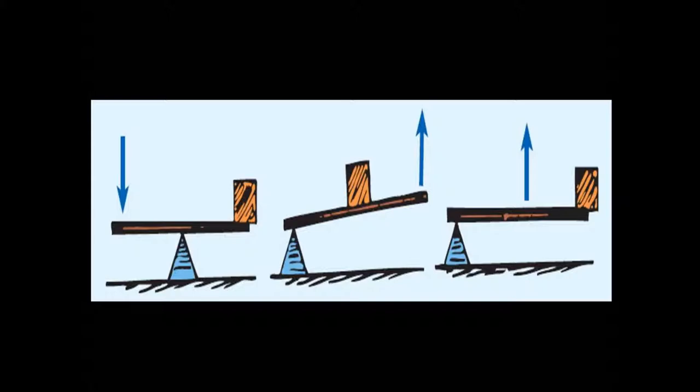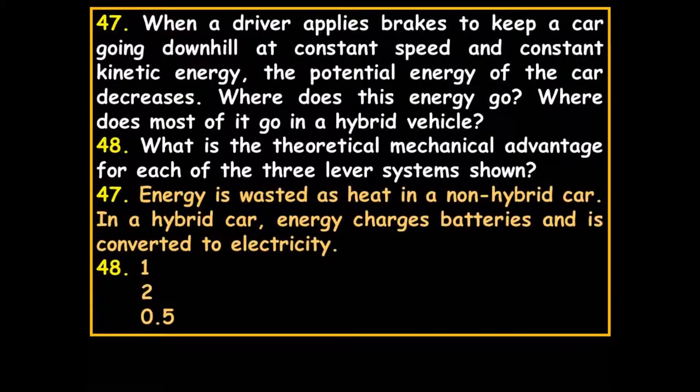When a driver applies brakes going downhill at constant speed, the potential energy of the car decreases. Where does this energy go? In a conventional car it becomes waste heat. In a hybrid vehicle, a lot of that kinetic energy is converted into electrical energy, which is a form of potential energy, and can be used later. Now looking at the lever and fulcrum: dividing the board in half, the ideal mechanical advantage (IMA) values go 1, 2, 0.5 from left to right.